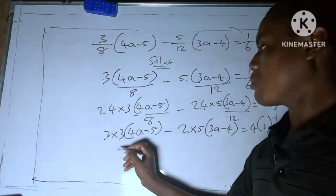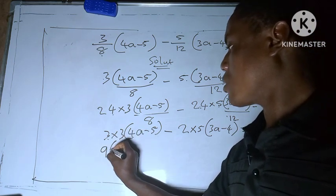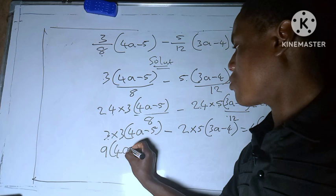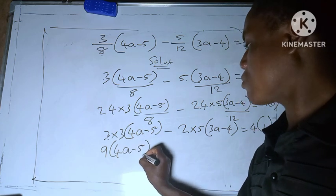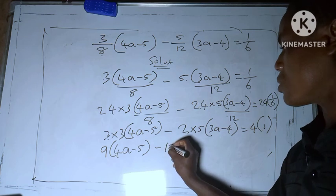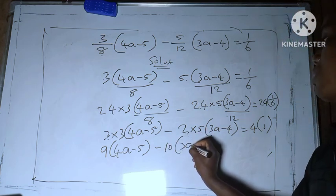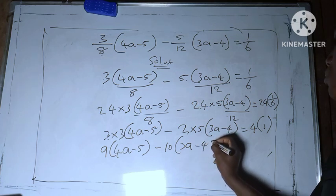So let's multiply: 3 times 3 to give you 9, times 4a minus 5, minus 2 times 5 to give you 10 times 3a minus 4, equal to 4.